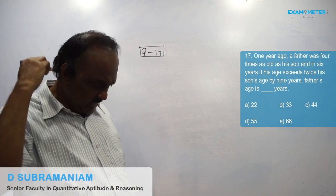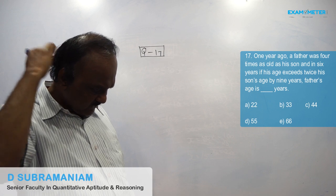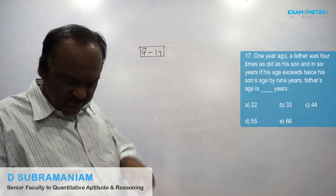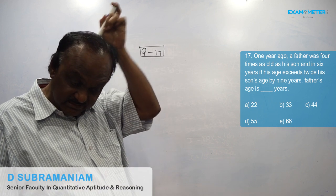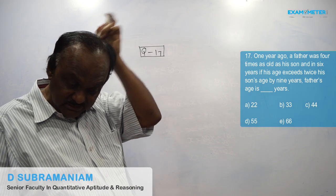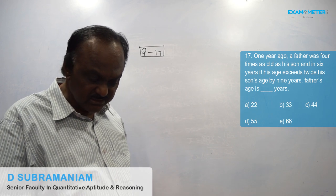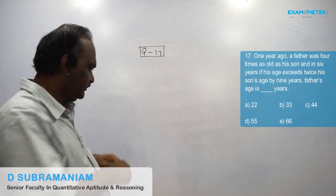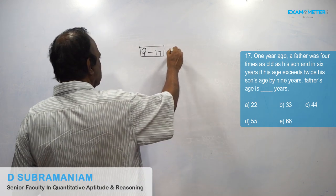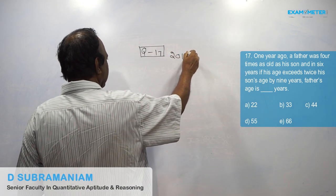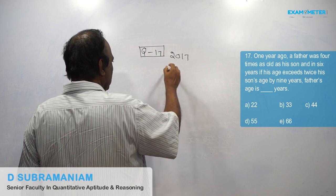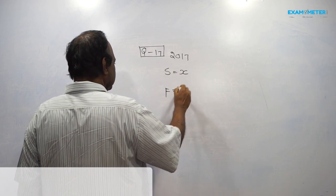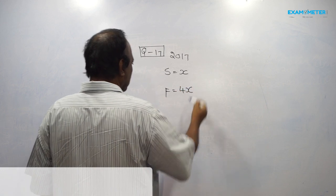One year ago, a father was four times as old as his son, and in six years, if his age exceeds twice his son's age by nine years, what is the father's age? One year ago, that is 2017, if we take the son's age as x, then the father will be four x.